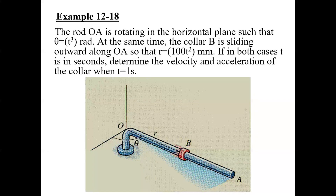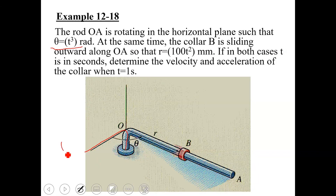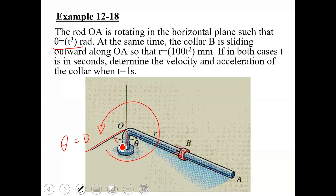We are going to start with example 12-18. We have a rod OA rotating in a horizontal plane as shown in the figure such that at any given instant, the angular displacement theta is defined as a function of time: theta equals t cubed. Initially this rod was located at theta equal to zero, and it rotates within the horizontal plane.